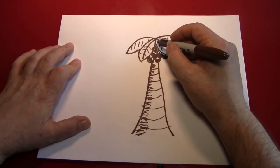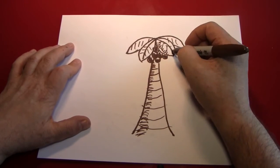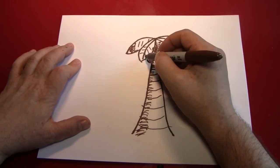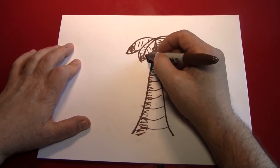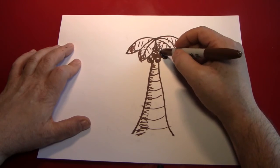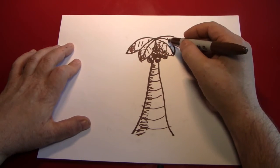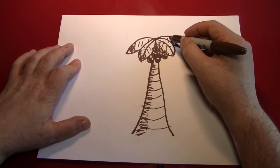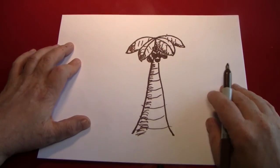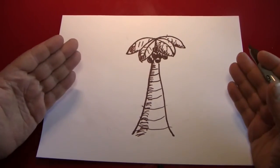And put some on the leaves because it's consistent to be consistent, a little bit of shadowing. And that's pretty much it, it's a palm tree.